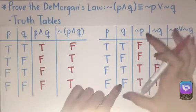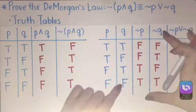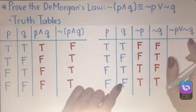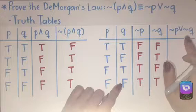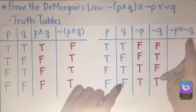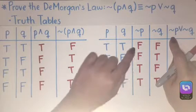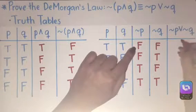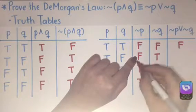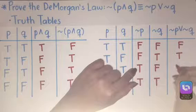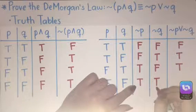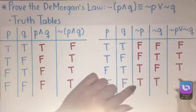Now we have the negation of P and the negation of Q, so we can find the statement negation of P or negation of Q. By the laws of disjunction, this statement is only false when both terms are false. So if negation of P is false and negation of Q is false, then we know this is false. In all other cases it's true — so false-true gives true, true-false gives true, and true-true gives true.